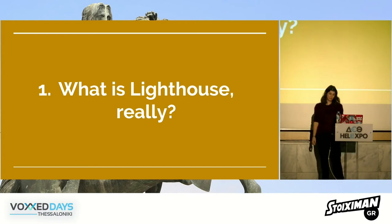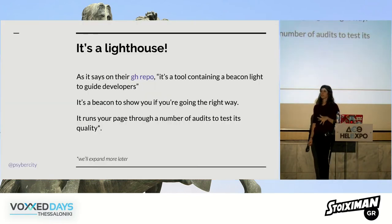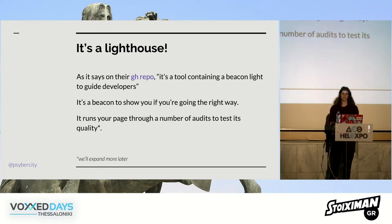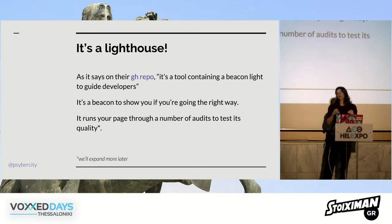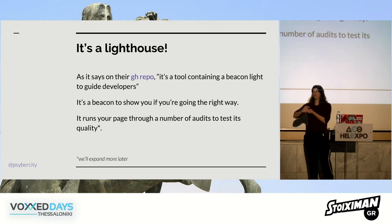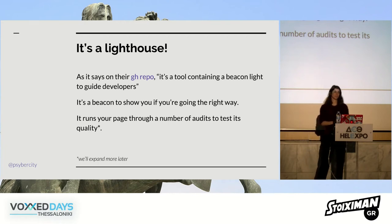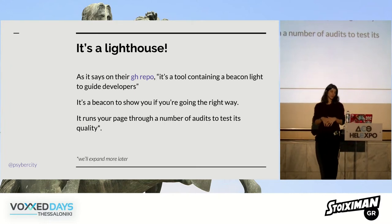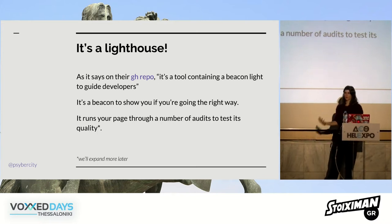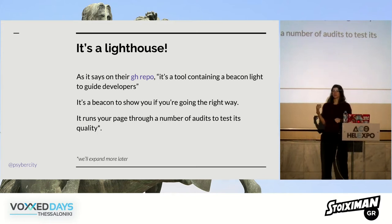So what is Lighthouse really? As it says in their GitHub repo, Lighthouse is a tool containing a beacon light to guide developers — basically a lighthouse to keep developers on the right track, away from bad practices, and guide you towards the better web. It runs a number of audits on your page and produces a report you can read to see what you're doing better.